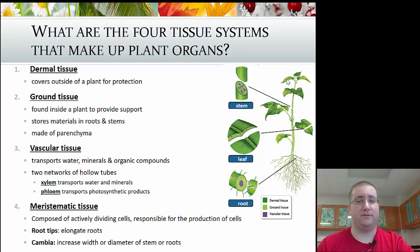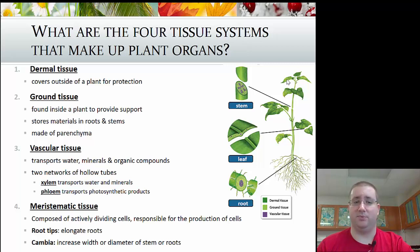The second tissue type is known as ground tissue. This is the workhorse tissue type, found inside the plant to provide support and store materials. It's made of that very common parenchyma cell type that does most of the work for the plant.